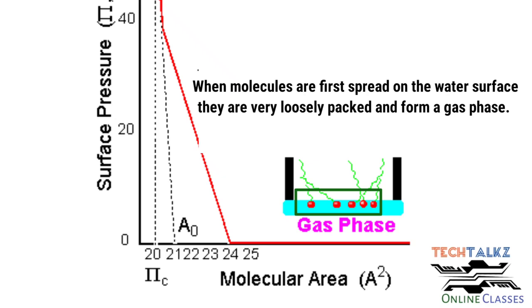Looking at the gas phase: the hydrophilic head is oriented toward the water, and the hydrophobic tail is oriented toward the air. In this phase, the molecular area is large and the surface pressure is very low.